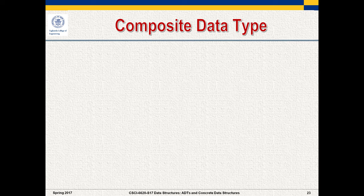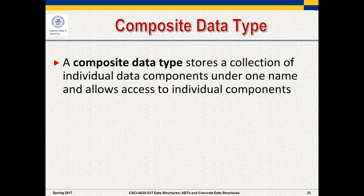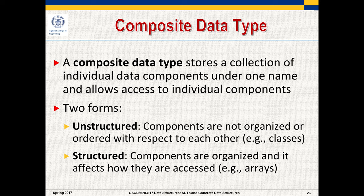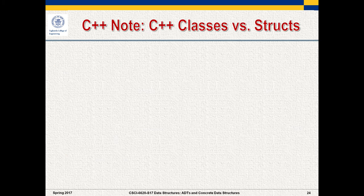A composite data type stores a collection of components under one name and allows access to the individual components. There are two kinds: unstructured, where the components are not organized with regard to each other — classes are unstructured vis-à-vis each other — versus structured, where the components in the data type are organized and it affects how they are accessed. For example, an array of values is intrinsically tied to how the array is laid out and how you access it.